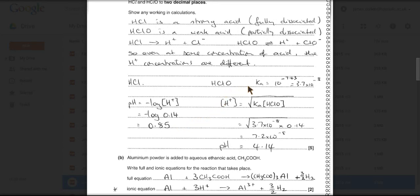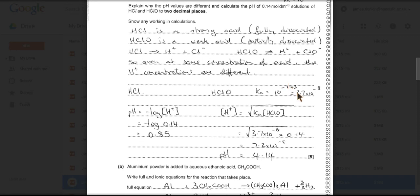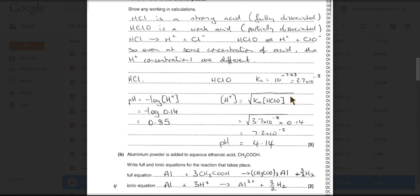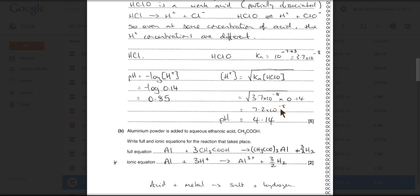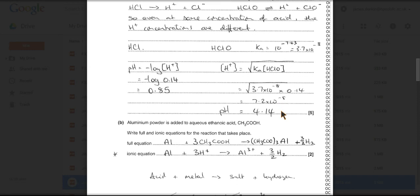HClO is a bit different. We were given the pKa, so you can see I've calculated Ka there. That's 10 to the minus pKa, so it comes out at 3.7 times 10 to the minus 8. To calculate the H plus concentration of a weak acid, it's the square root of Ka times the concentration of the acid. So we know both of those terms now. So we get an H plus concentration of 7.2 times 10 to the minus 5, which gives us a pH of 4.14.